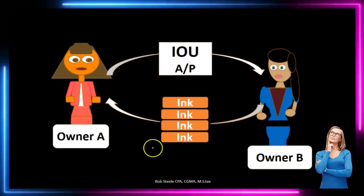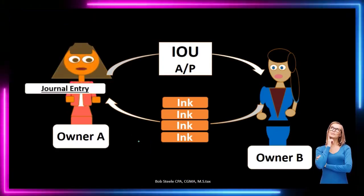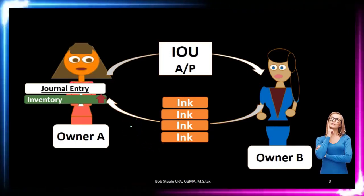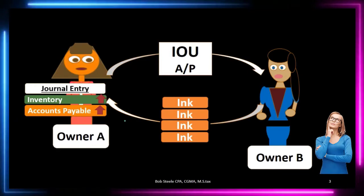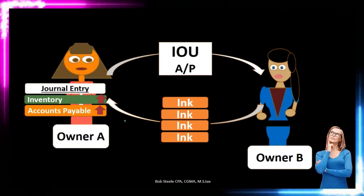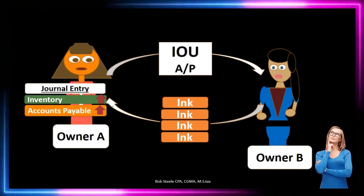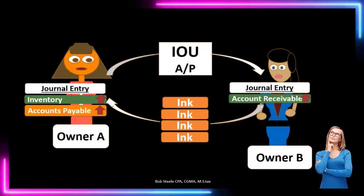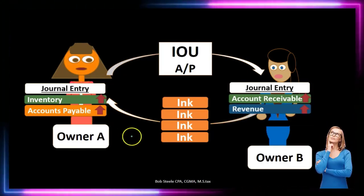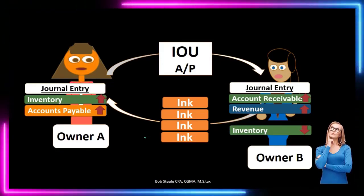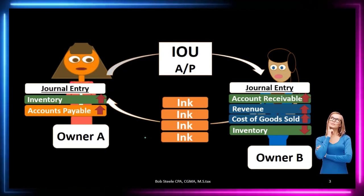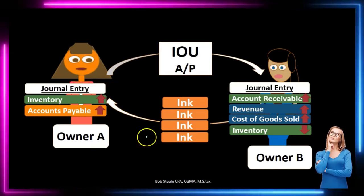When the seller ships the ink to the purchaser, Owner A's journal entry would show that inventory has gone up and accounts payable has gone up. As the inventory is received by Owner A, it often comes with an invoice — essentially a bill — and Owner A will recognize that the inventory has been received and that money is now owed to Owner B. On Owner B's side, accounts receivable goes up because that is the point in time that revenue has been earned under the revenue recognition principle — the inventory was shipped. Inventory on Owner B's books goes down because it has been shipped, and cost of goods sold, the expense related to that inventory, goes up.